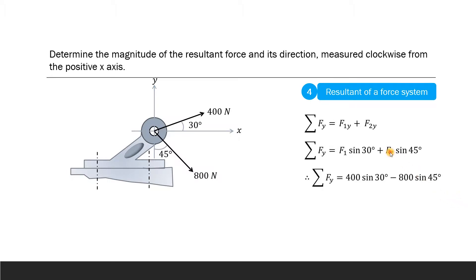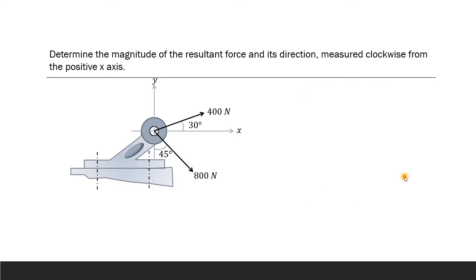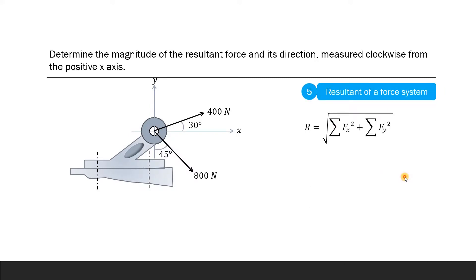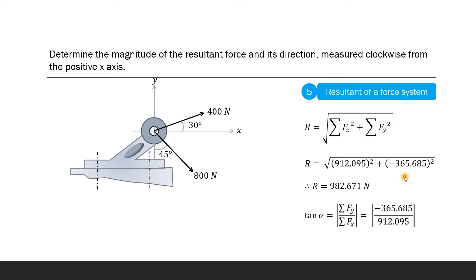The Fy component of F2 is negative because it is in the fourth quadrant, so we apply a minus sign. With F1 equal to 400 and F2 equal to 800, the summation of Fy is minus 365.685 Newtons. The resultant is given by the square root of (summation of Fx)² plus (summation of Fy)², which is the square root of 912.095² plus 365.685², and the resultant R comes out to be 982.671 Newtons.